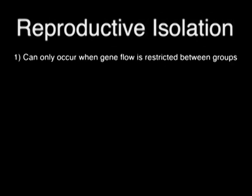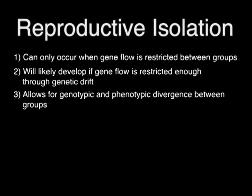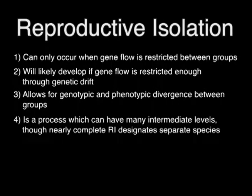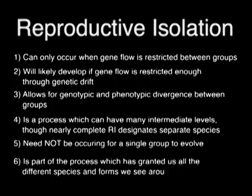Recapping the lesson: Reproductive isolation can only occur when gene flow is restricted between groups. It will likely develop through genetic drift alone if gene flow is restricted enough. RI allows for genotypic and phenotypic divergence between groups. It is a process which can have many intermediate levels, though nearly complete RI designates separate species. It need not be occurring for a single group to evolve. And finally, RI is part of the process which has granted us all the different species and forms we see around us.